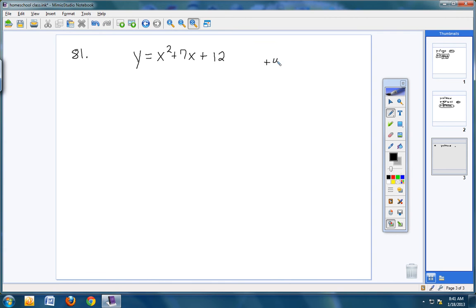Let's write this in intercept form. I have a lead coefficient of 1, so it's the easy kind. I'm thinking that if I have a positive 4 and a positive 3, those two numbers multiply up to 12, and they combine to give me a positive 7. So that was pretty fast.